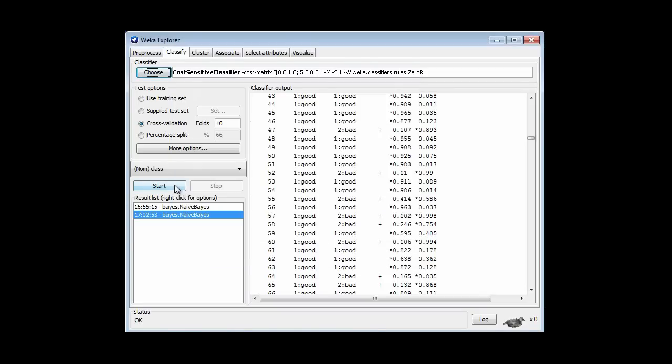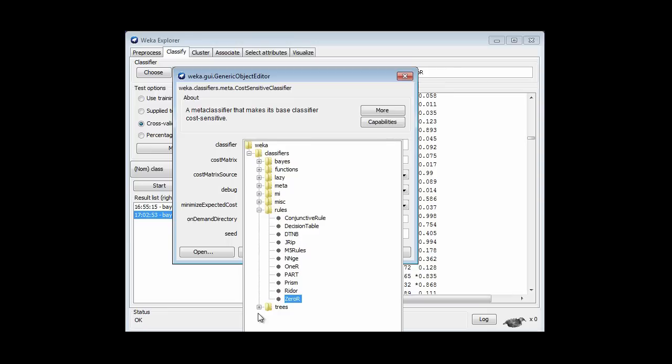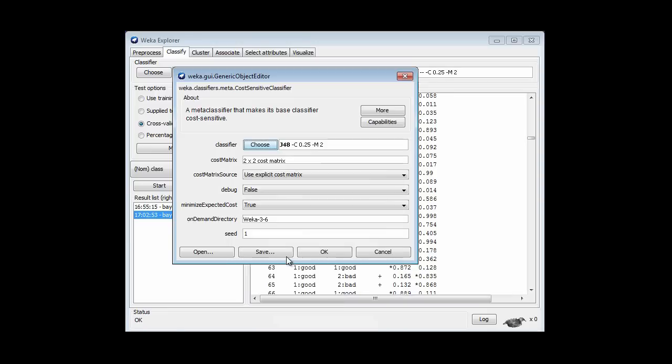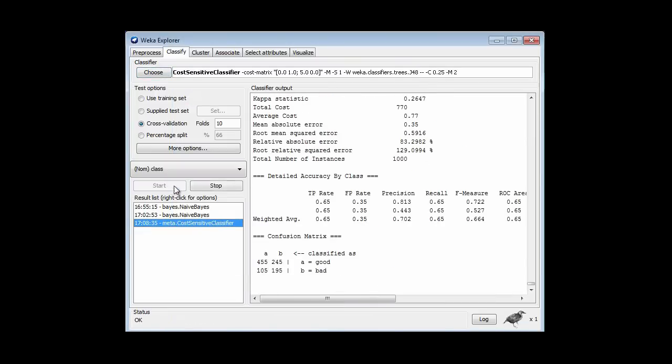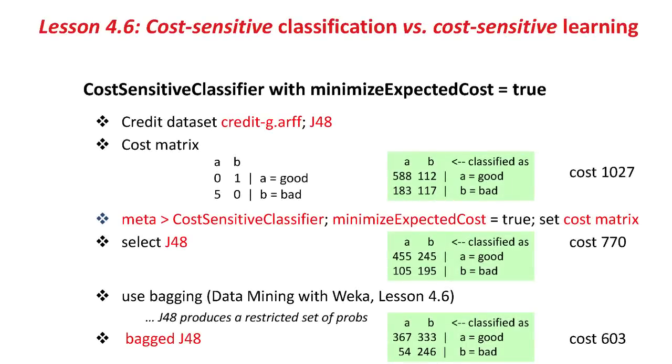Now if I run that with J48, did I select J48? No, I should have selected J48 here. Now if I run that with J48, I get this little matrix here, and a total cost of 770. In fact, back to the slide, that's the middle section of the slide, the cost of 770, with the confusion matrix that's shown.